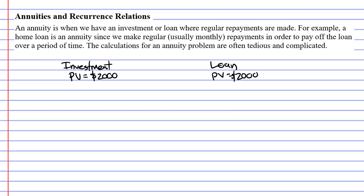For a loan, that means we owe the bank $2,000 initially. For our investment, we initially have $2,000 of our own money sitting in the bank. Let's also have an interest rate that's the same for both.